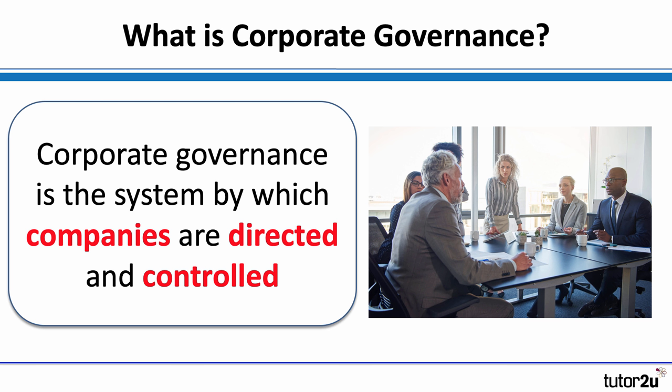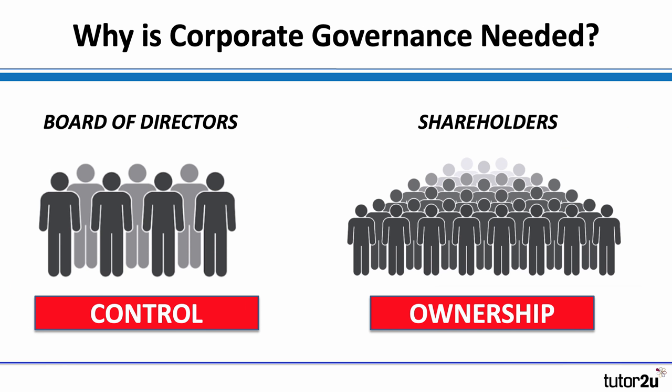It's an important concept, particularly for companies, because of a concept called the divorce between ownership and control — we've looked at this in a separate video. What this means is that companies are controlled by the board of directors, by the senior management. They may also be shareholders, but in many situations, particularly larger, complex businesses, there are many shareholders who have no involvement in the day-to-day running or control of the business, but they are still owners of the business.